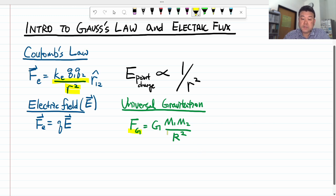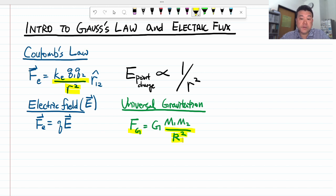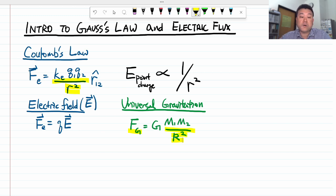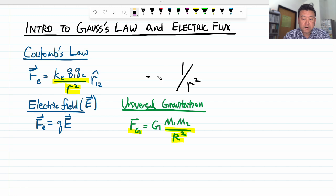Gravitational force due to a point mass is proportional to 1 over r squared. Inverse square laws are incredibly common. In particle physics, whenever we have a force or a field that decreases as 1 over r squared, we call that a long range force. That has to make you wonder: is there some physical significance to that 1 over r squared relationship, in a way that there wouldn't be for a 1 over r or 1 over r cubed relationship? We can look at another phenomenon that has a kind of inverse square law — I think it's intuitive enough for people to just think through.